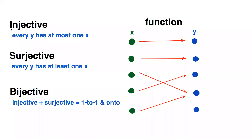This would be an injective function if every y had at most one x. So if we eliminate these two elements to remove that mapping, we have an injective function. You can have a lonely y over here, so to speak.